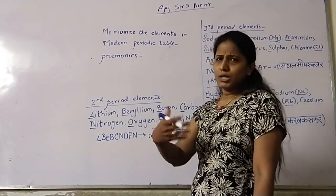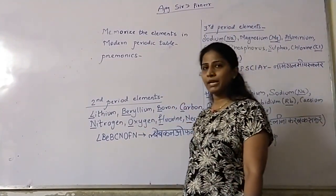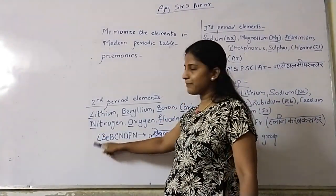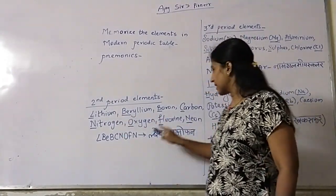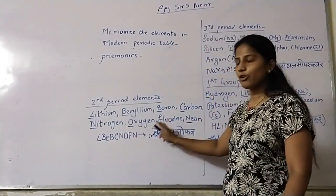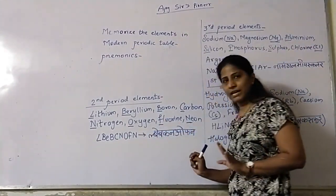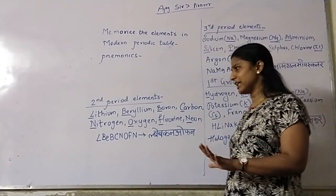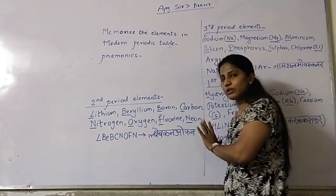We will take the symbols or initials of each element. Lithium is Li, so I take the first letter L. Beryllium is Be, so I write B. Boron is B, Carbon is C, Nitrogen is N, Oxygen is O, Fluorine is F, and Neon is Ne — but I have written only N so our mnemonic word stays together. I have written all symbols and initials, then converted them into a Hindi word.